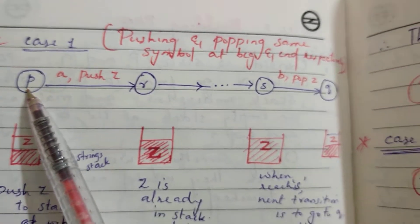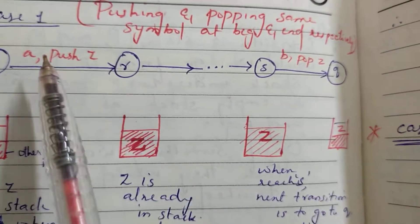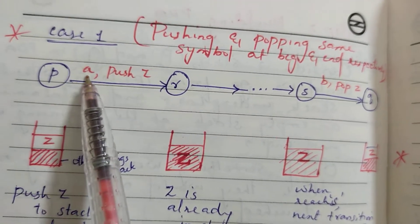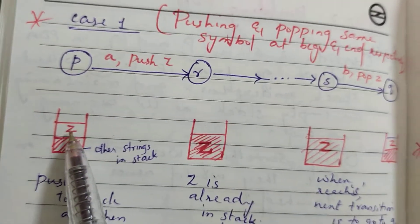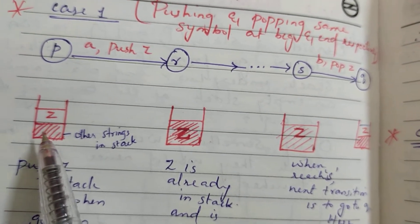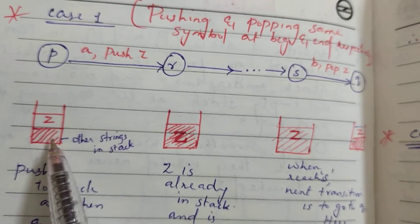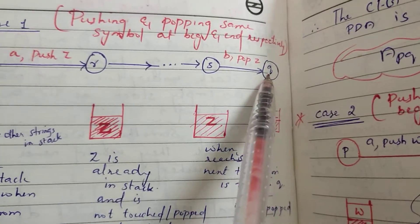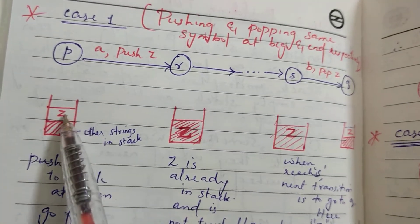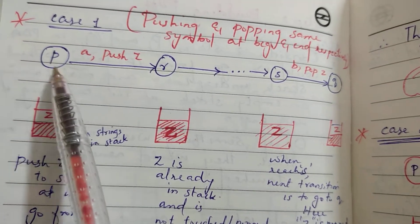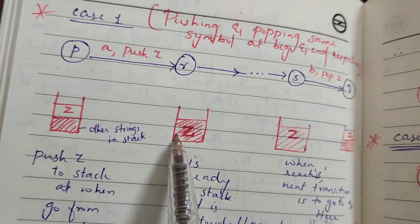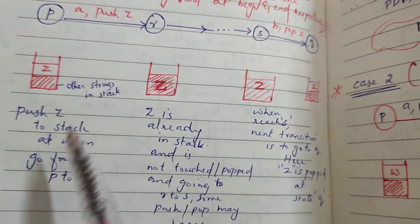P is our starting state. The intermediate state is R to S. In R and S, there are a few states. That is an input symbol A — we are pushing Z. We will take a new stack with new symbols. If you push the stack, there are some symbols in the stack. Then set is already in the stack and is not touched or popped. Going R to S — if you push R to S, you need to push and pop here.